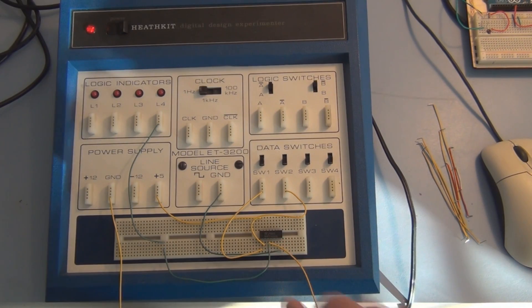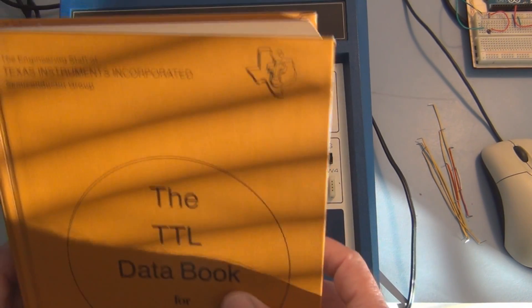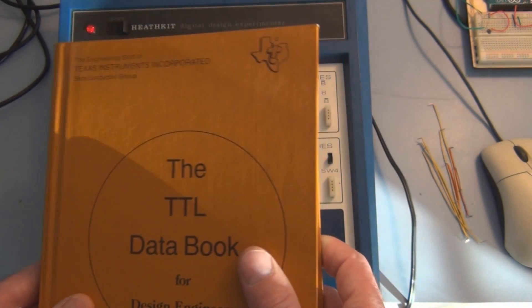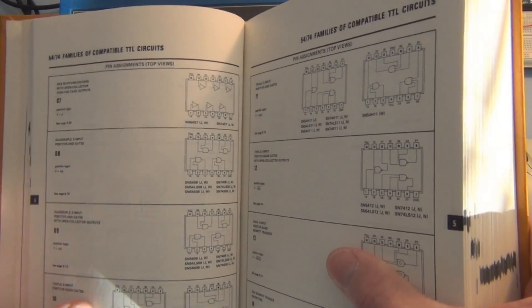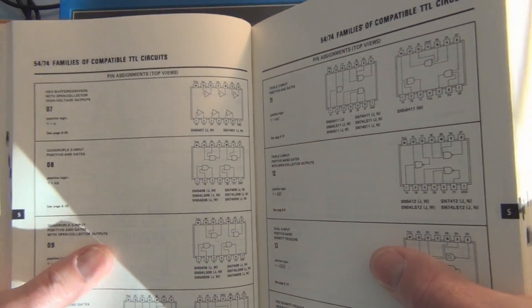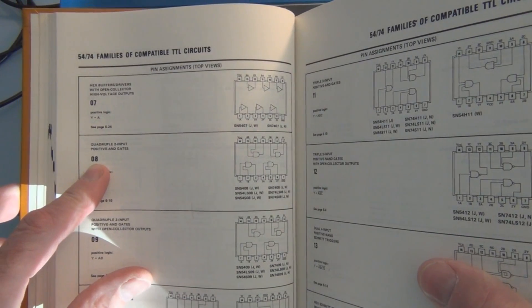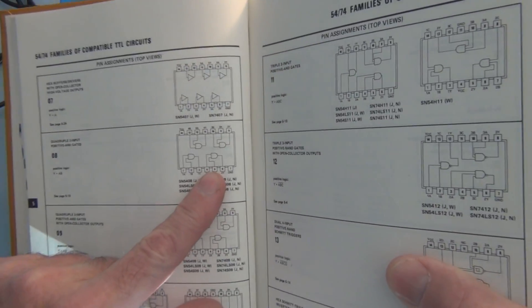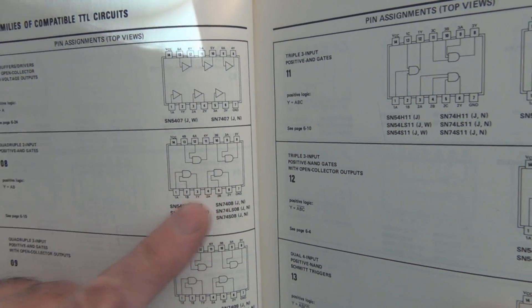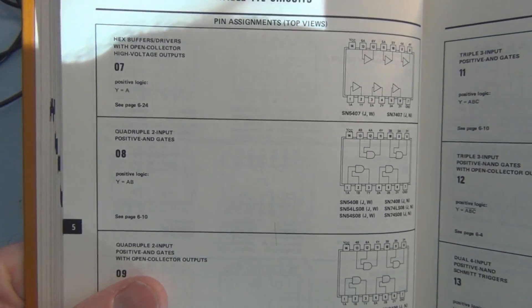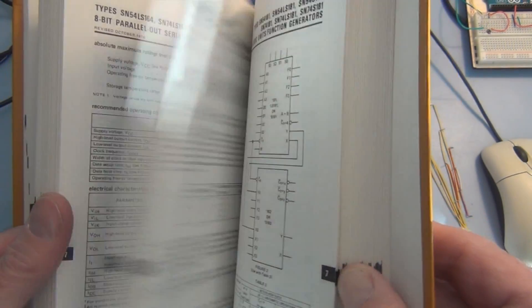In order to know how to hook up this IC chip, you would utilize something like this. This is the Texas Instruments TTL data book, and in the front section of the book is a quick reference to the individual ICs. Here we have the 7408, and this shows the pinout for that particular chip. More detailed information is further on in the book.